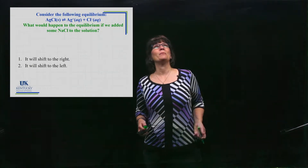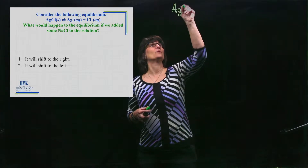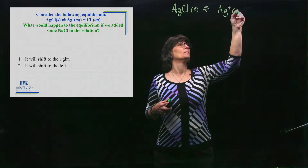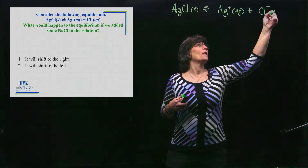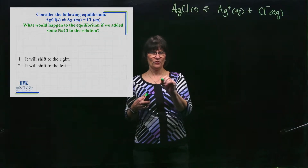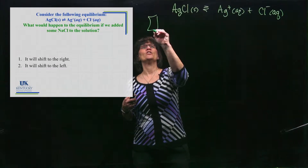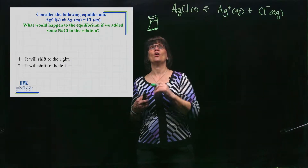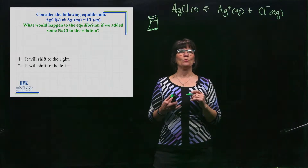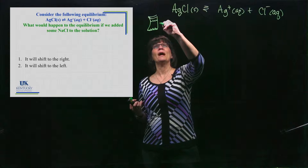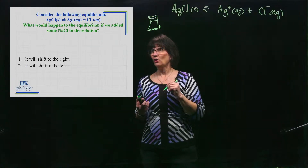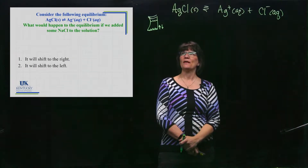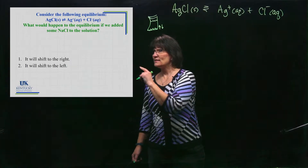Let me go ahead and write that reaction so I can be pointing to it and talking through it. We've got the solid and we have the ions present. So we're going to draw a little beaker in which I have a bunch of silver chloride sitting in the bottom, a little bit of it dissolving, and it has set up its equilibrium. Every time one of the Ag's dissolves, one of the Ag's is going to have to reform out of solution — that's what it means to be at equilibrium.